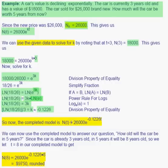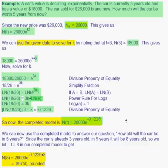Now we can modify our equation. We write n as a function of t equals 26,000 times e to the negative 0.1226t, because now we know what k is. We want to know what the value of the car will be in 5 years. Since the car is already 3 years old, we add 5 to 3 to make it 8 years old. So we let t equal 8, not 5, in our completed model.